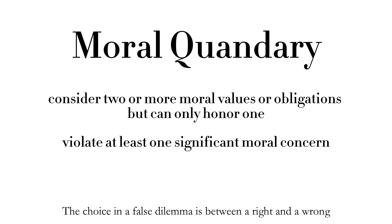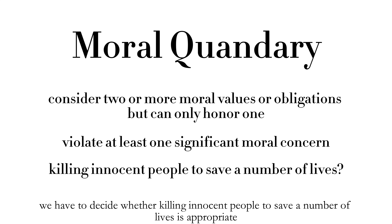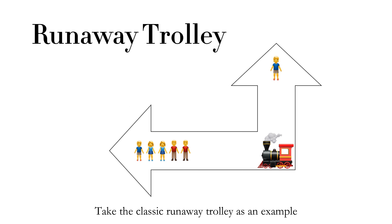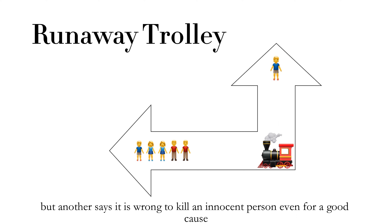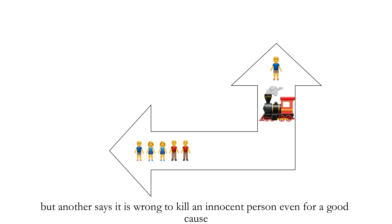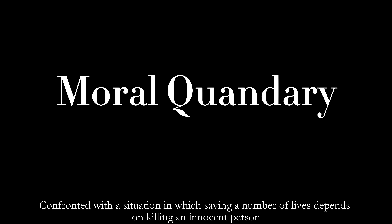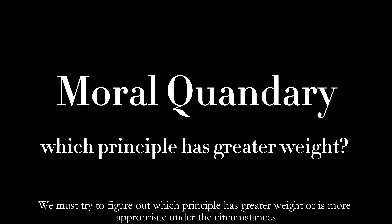The choices in a false dilemma are between a right and a wrong. Sometimes in a moral quandary, we have to decide whether killing innocent people to save a number of lives is appropriate. Some moral dilemmas arise from conflicting moral principles. Take the classic runaway trolley as an example: one principle is we should save as many lives as possible, but another says it is wrong to kill an innocent person even for a good cause. Confronted with a situation where saving many lives depends on killing one innocent person, we face a moral quandary and must figure out which principle has greater weight.